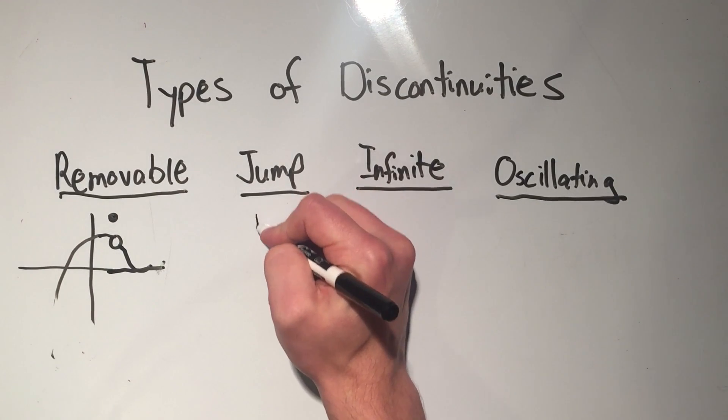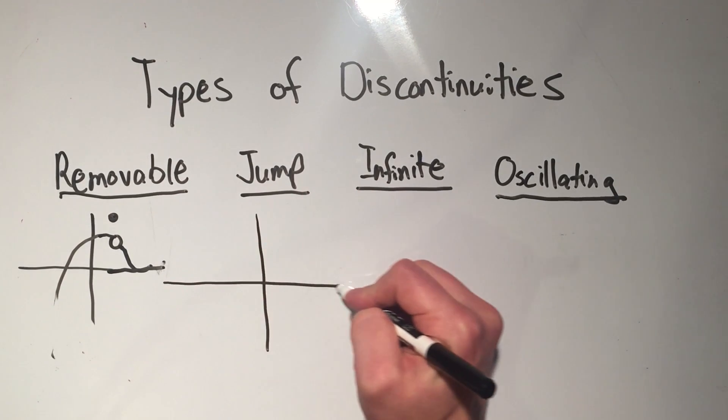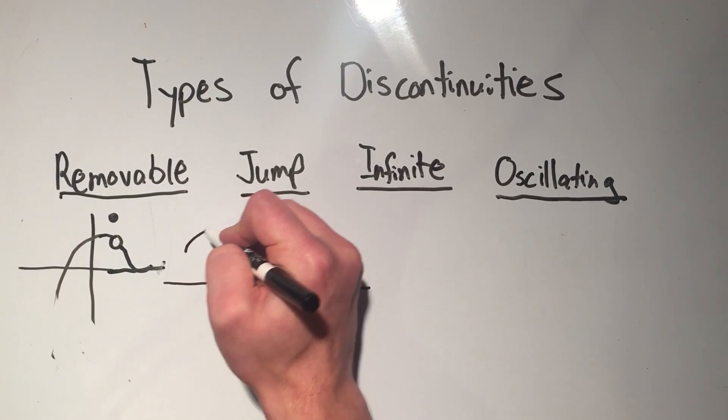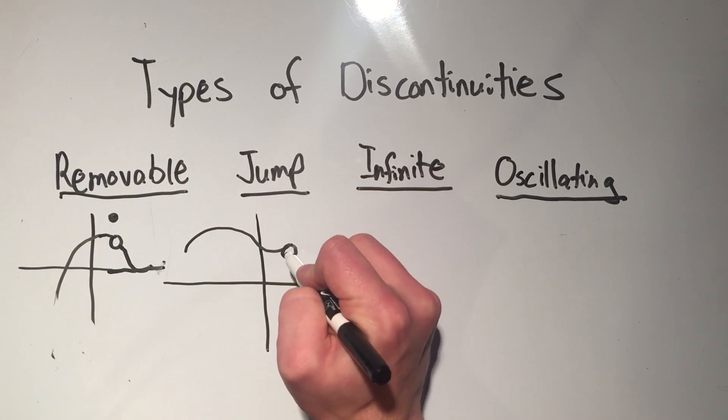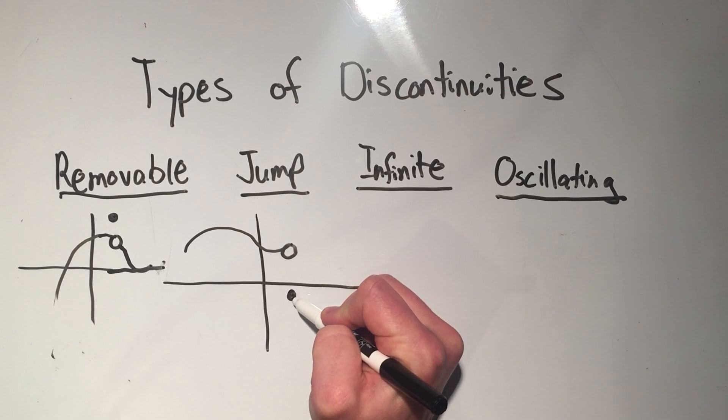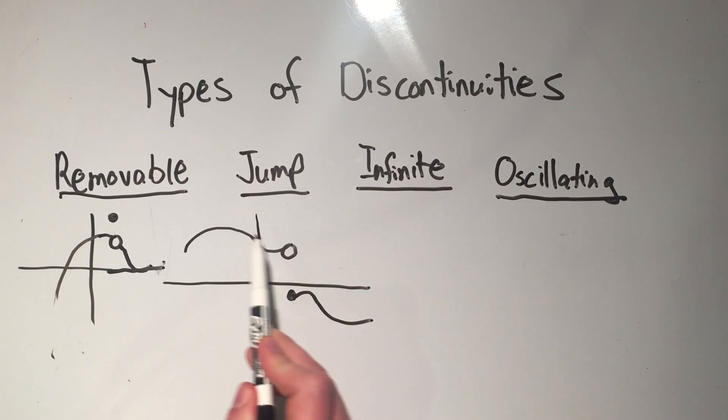A jump discontinuity. As you might expect, I'm continuous to some certain point. And then my graph hops and it goes somewhere else where there's like a jump. That's where it gets its name. So at this point, there's a jump discontinuity.